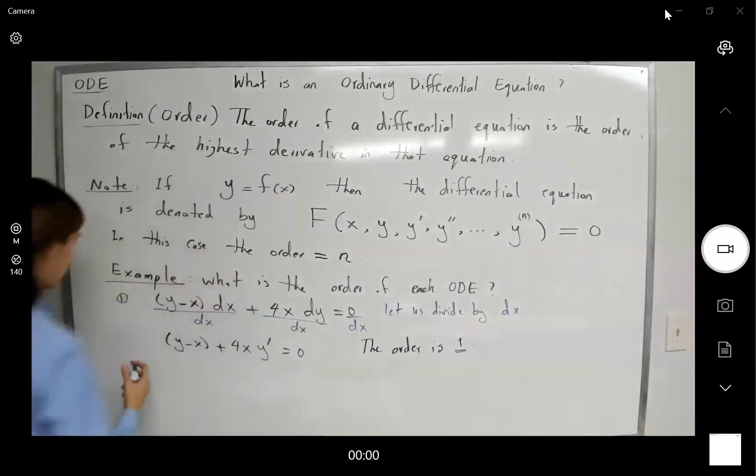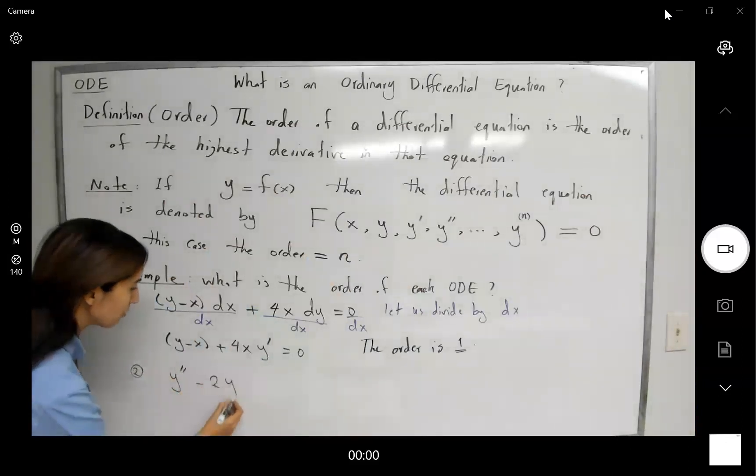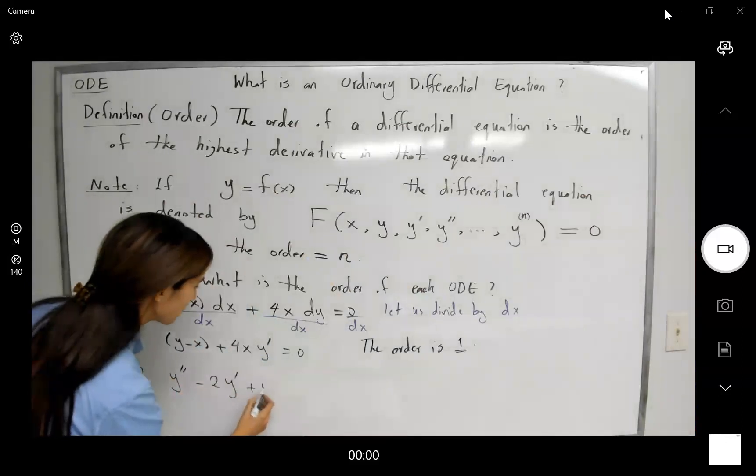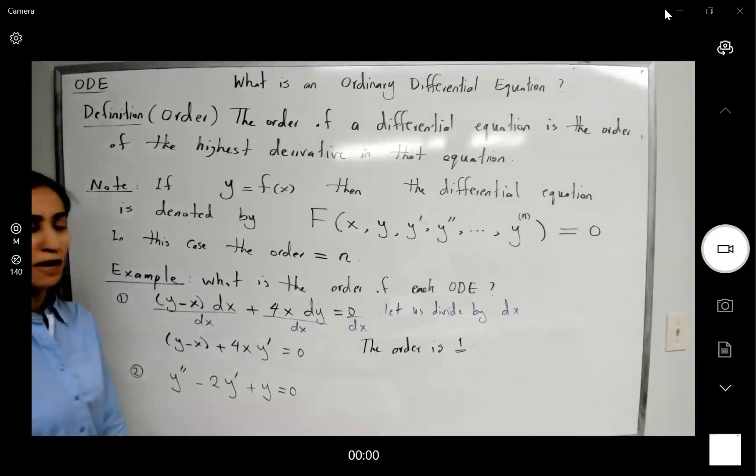The second derivative of y minus 2 times the first derivative of y plus y equal to 0. Well, we don't have to do any algebra, no division, nothing like that. Why is that? Because we have all of the derivatives next to each other, and we can actually compare the derivatives to order. The highest order is 2, since you have the second derivative of the function available here. So the order is equal to 2.